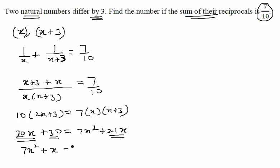If you take everything on single side, you will get 7x square plus x minus 30. I have taken everything on the right hand side. So we are left with this quadratic equation to solve.